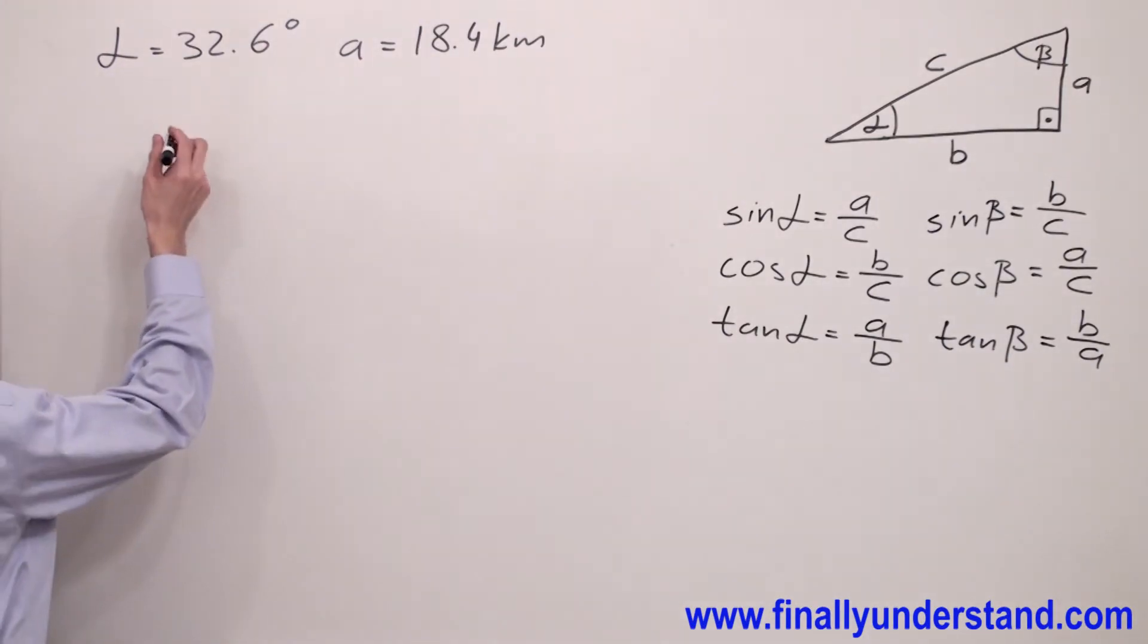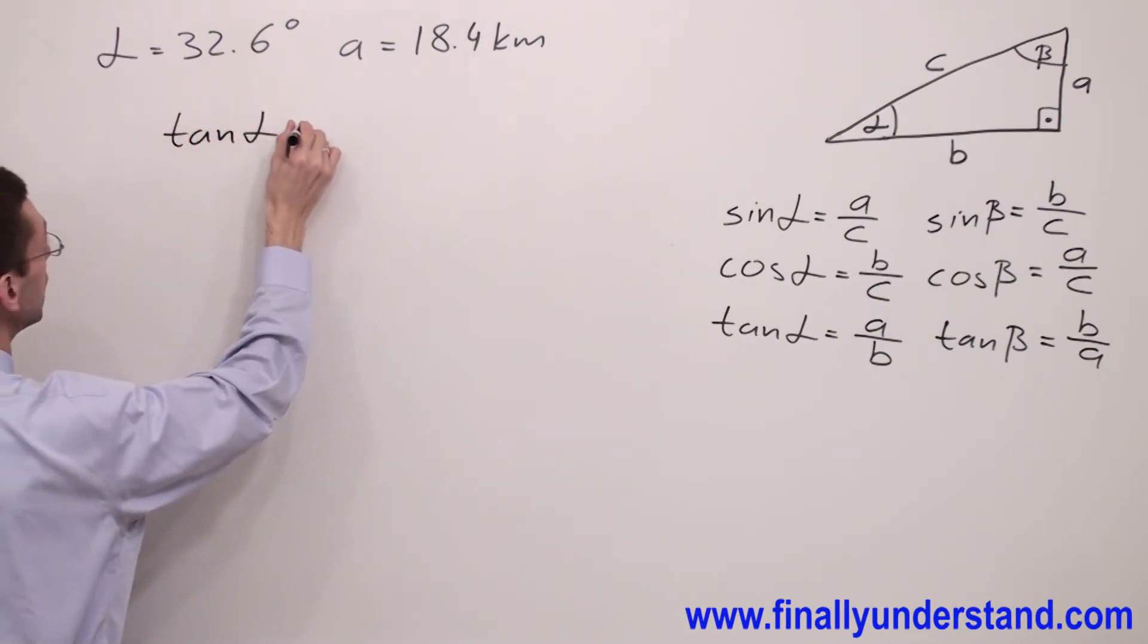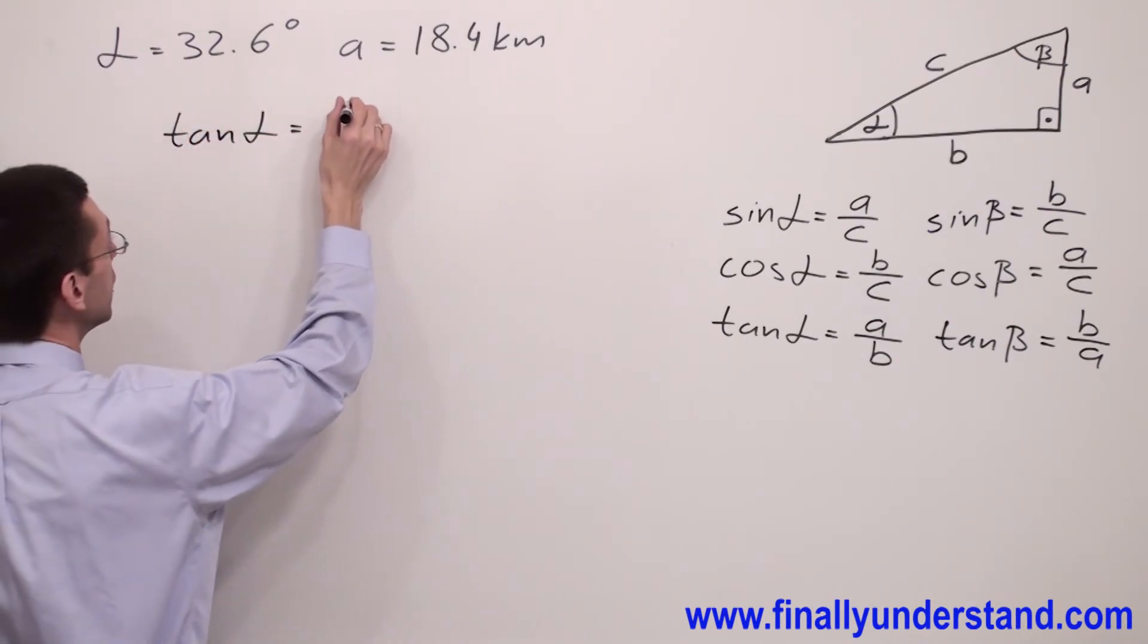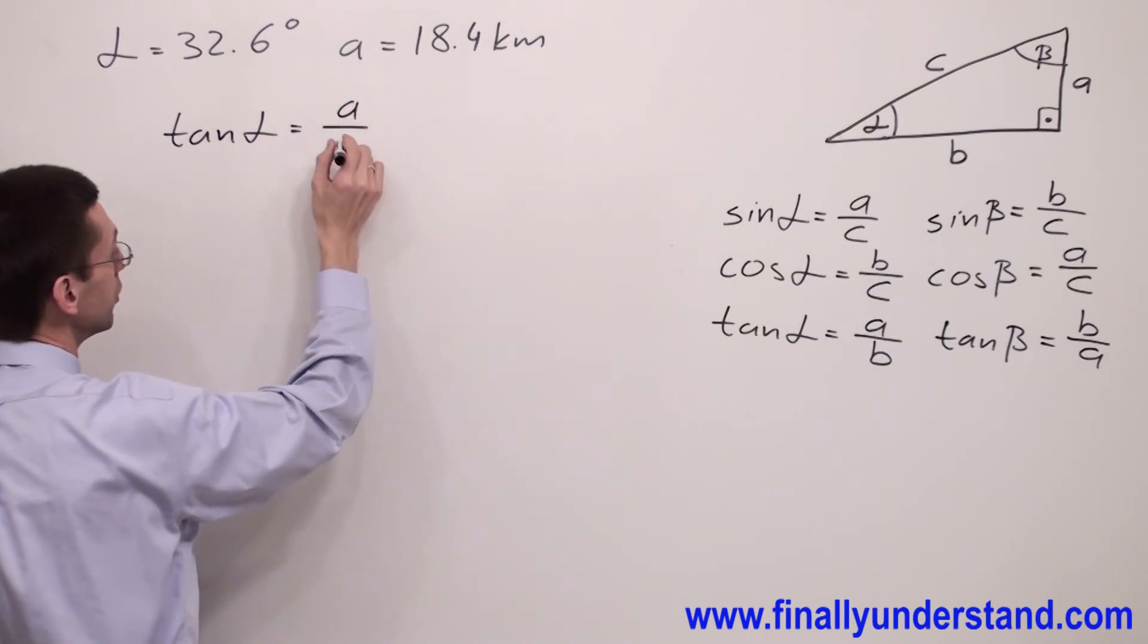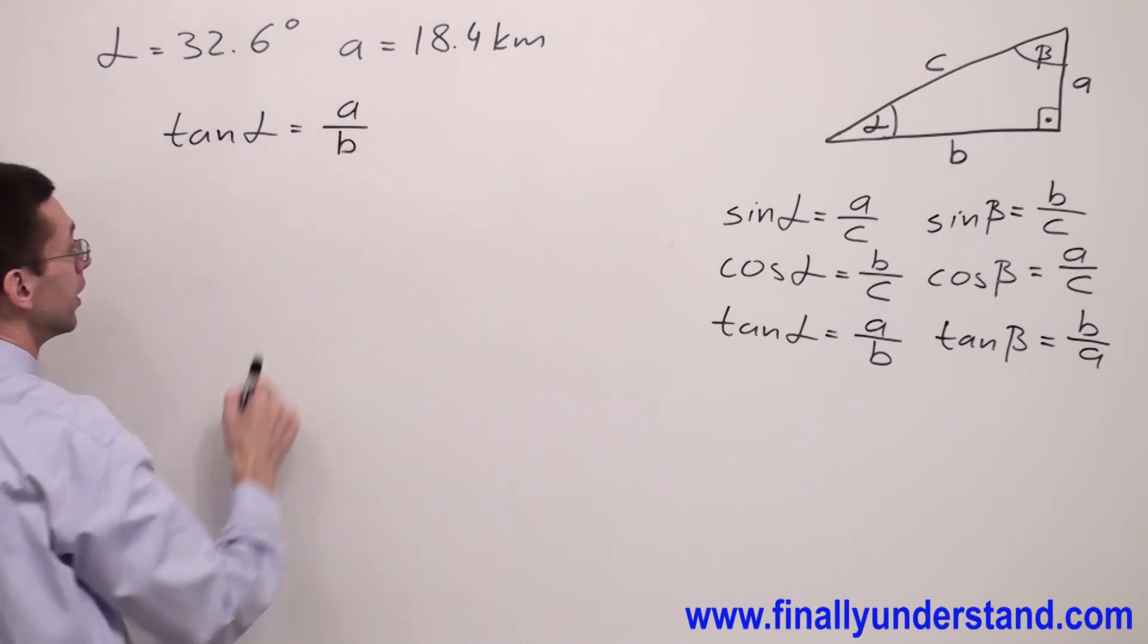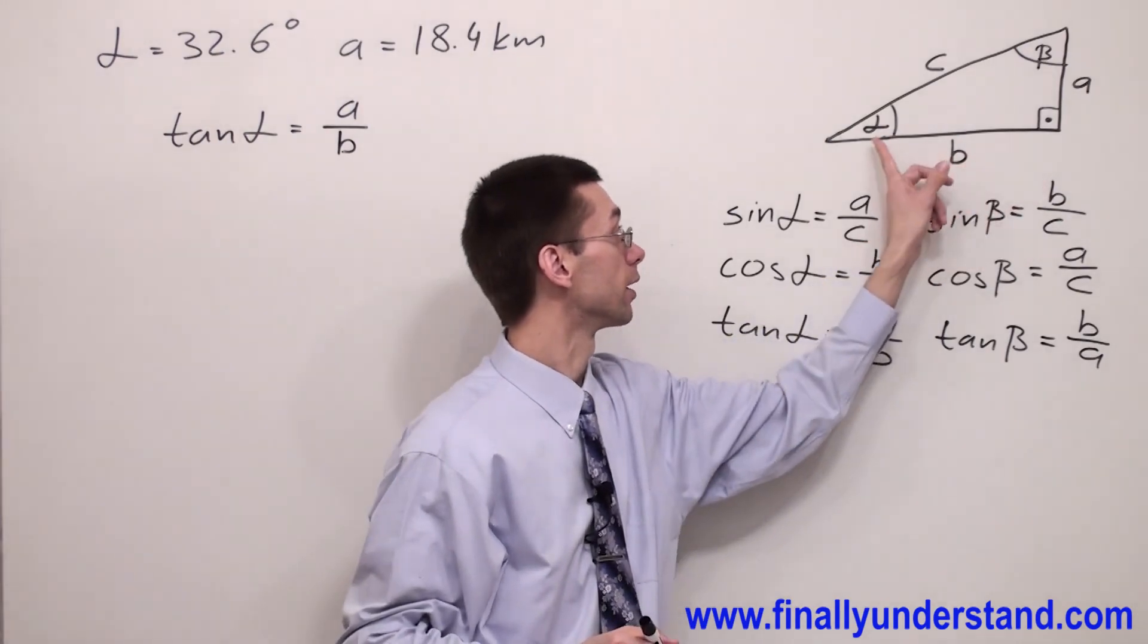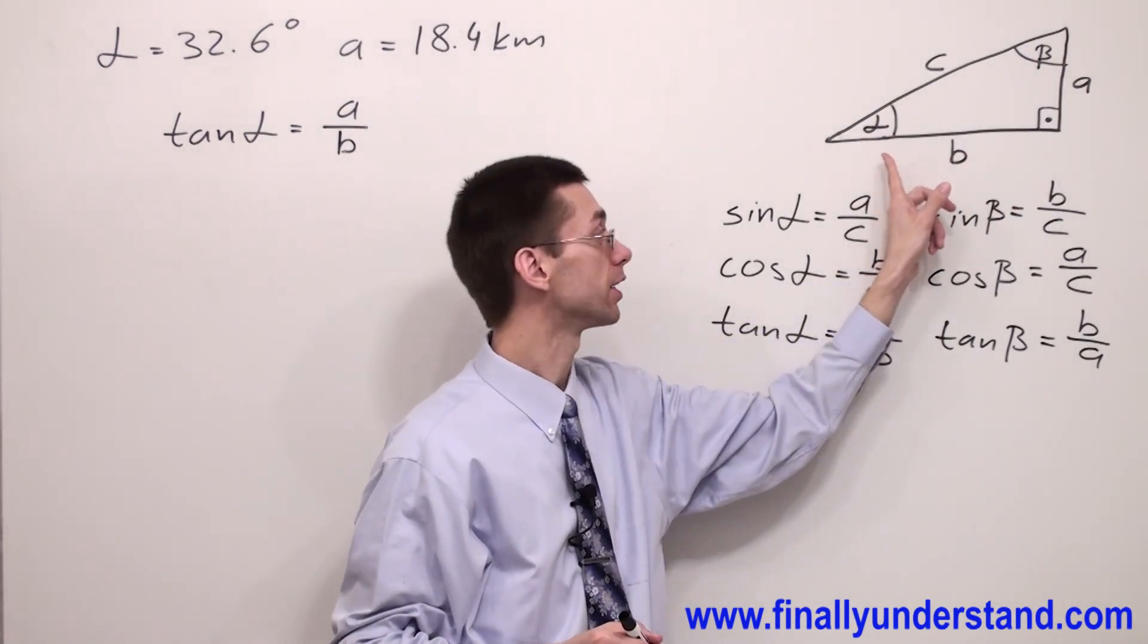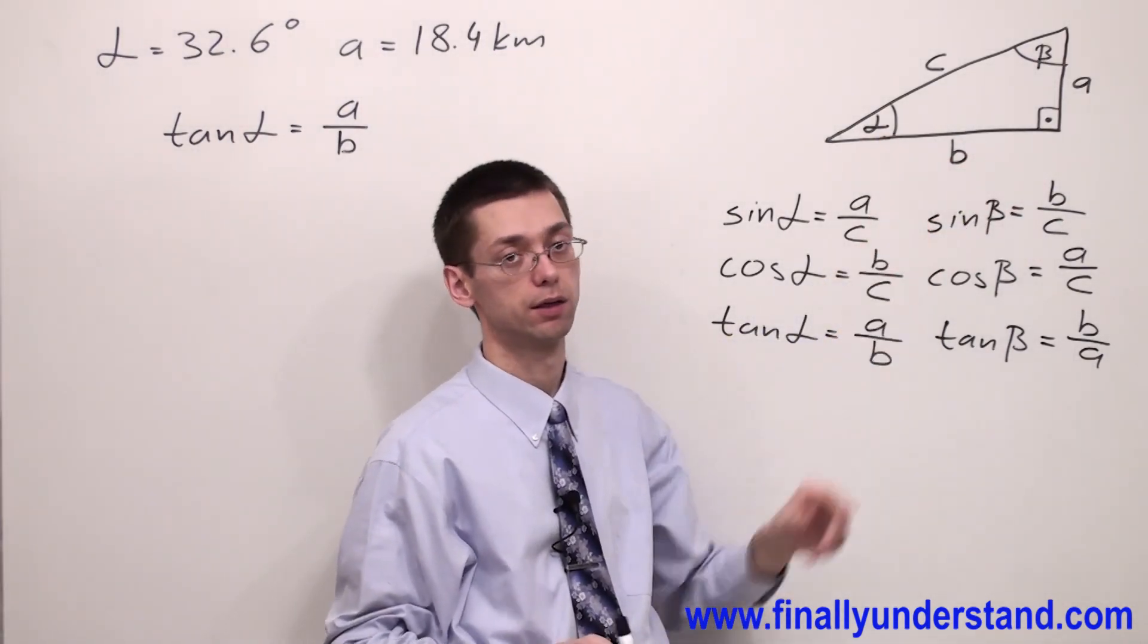We have tangent alpha is equal to A over B. Opposite side to angle alpha over the adjacent to angle alpha.